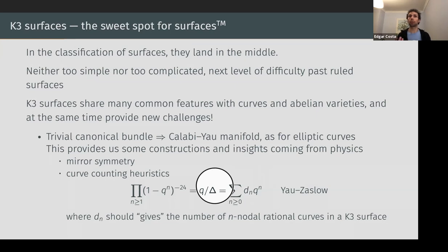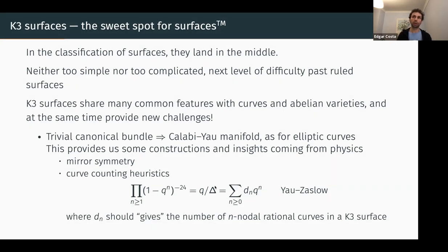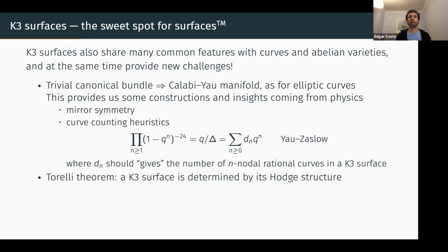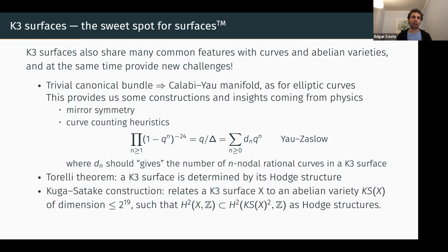There's a real connection between geometry and the modular form delta — the unique cusp form of weight 12 with level one. Going away from physics, we have a Torelli theorem. Just as a curve is determined by its Jacobian, a K3 surface is determined by its Hodge structure. This allows us to understand very well the period map of a K3 surface.